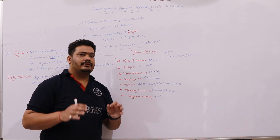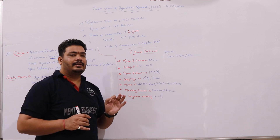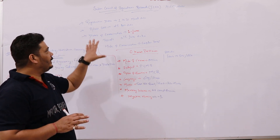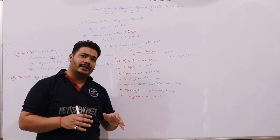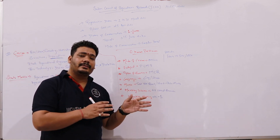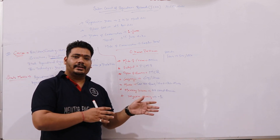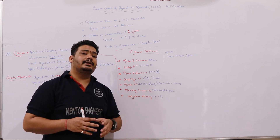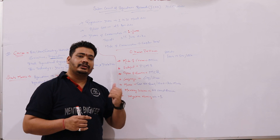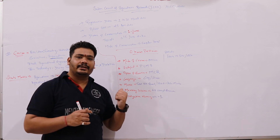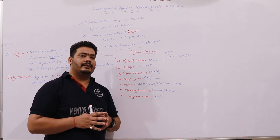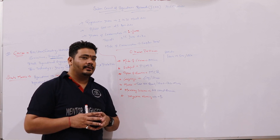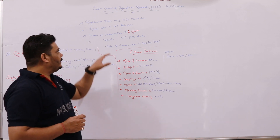ICAR stands for Indian Council of Agriculture and Research. The registration date starts from 1st March and the last date is 31st March 2020. You can visit the official website at ntaicr.nic.in for more information.